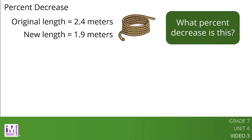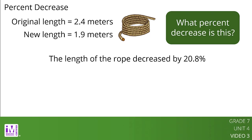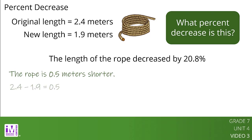Here are two ways to understand that the length of the rope decreased by 20.8%. We could first find that the rope is now 0.5 meters shorter, because 2.4 minus 1.9 equals 0.5. We can then divide this decrease by the original length: 0.5 divided by 2.4 equals about 0.208. This means the length of the rope decreased by approximately 20.8%.